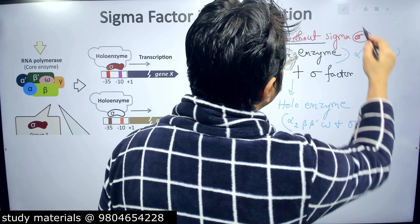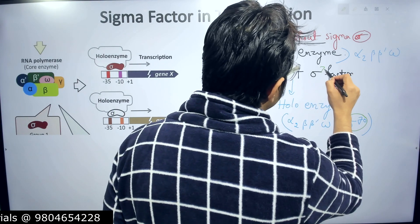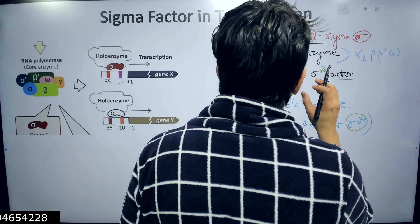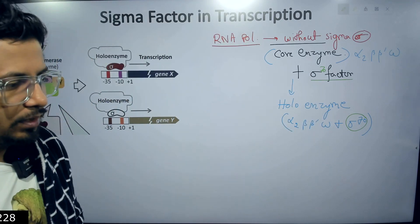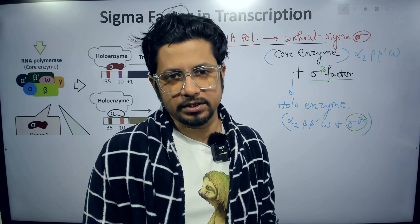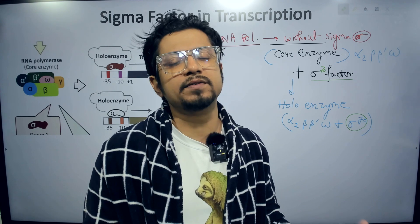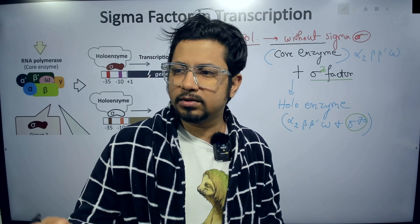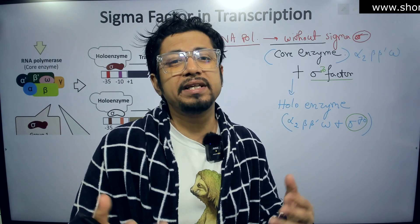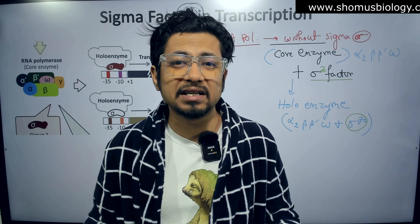The sigma factor used here is known as sigma 70. Sigma 70 is the basic transcription factor for transcribing all the housekeeping genes. Housekeeping genes are those genes whose products are required throughout the lifespan of the prokaryote — we need to turn them on or off depending on requirement, but we need them throughout.